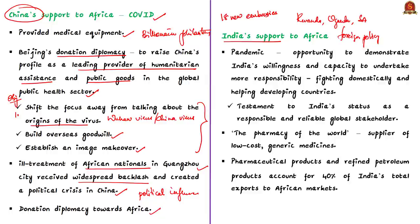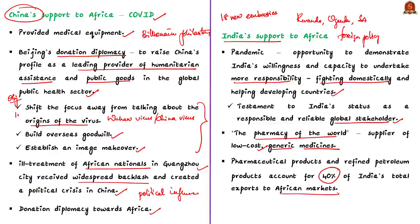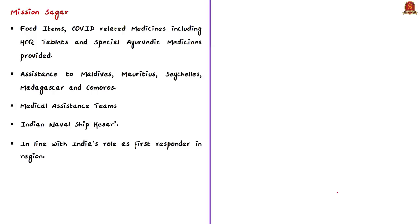This demonstration showcases India's status as a responsible and reliable global stakeholder. India is widely acknowledged for its role as the pharmacy of the world and a supplier of low-cost generic medicines. Pharmaceutical products along with refined petroleum products account for more than 40% of India's total exports to African markets. One of India's most notable initiatives is Mission Sagar, which is the government's outreach during this COVID-19 pandemic.